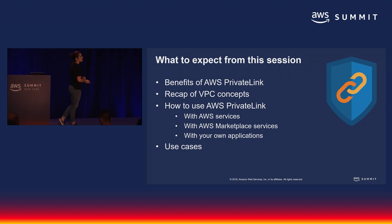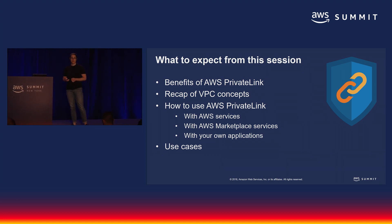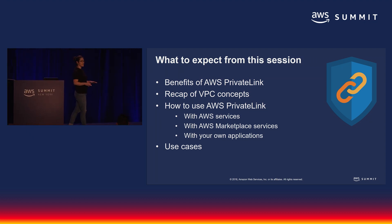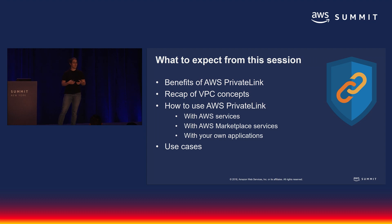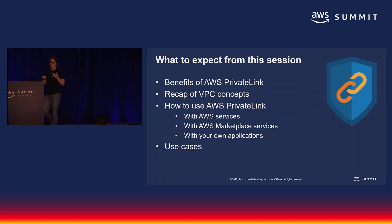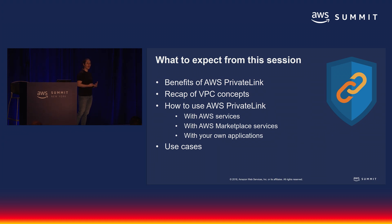What's our agenda today? Firstly, I'm going to tell you why you should use PrivateLink. Then I'll go over some VPC basics, some of the fundamentals you need to know to actually use PrivateLink. This is an intro talk, a 200-level session. We're going to do some walkthroughs looking at how you would share a service, how you would use AWS services, and how you would consume a service shared with you. Lastly, I'll go over some example use cases so you can see PrivateLink in action.